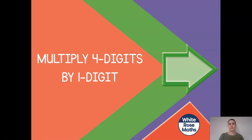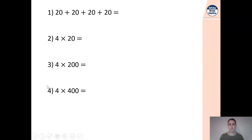Hello Year 5 and welcome to your next maths lesson. We're going to be using the skills we've learned in the last two days, multiplying two and three digit numbers by one. I'm going to make it more difficult for you today — we're going to look at multiplying four digits by one. But before we do that, it's time to warm up your brain. Pause the video and have a go at the questions on the screen.